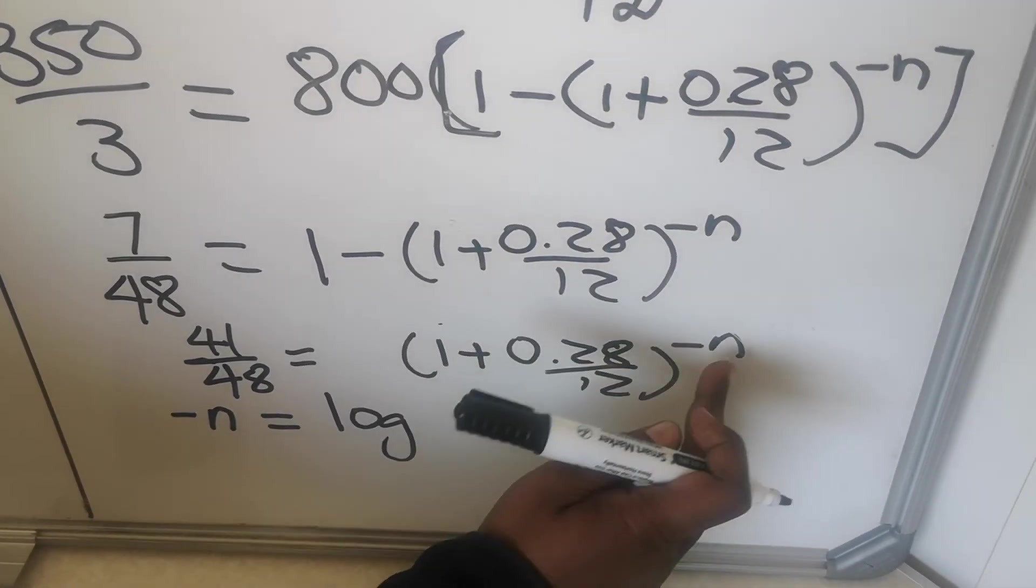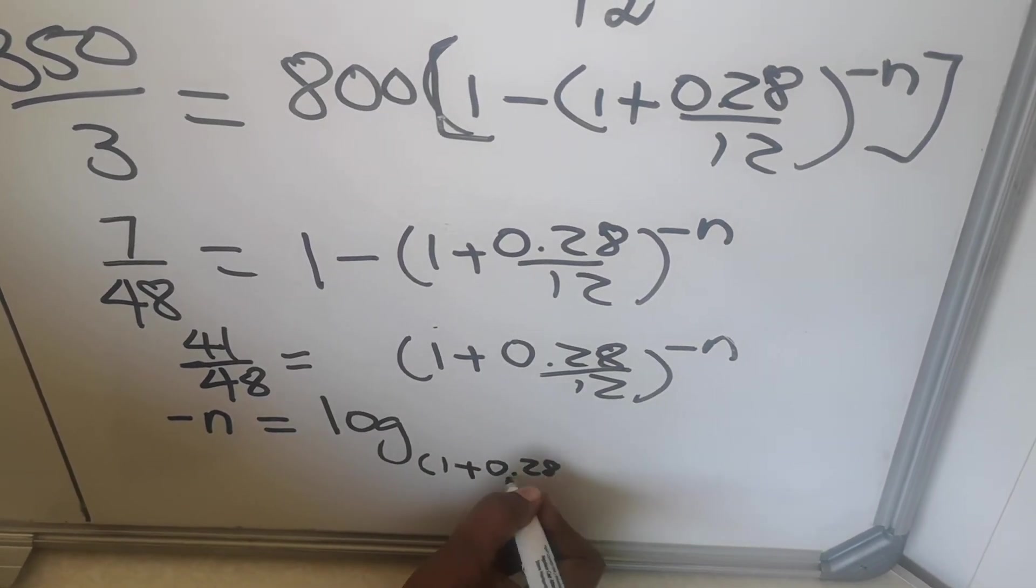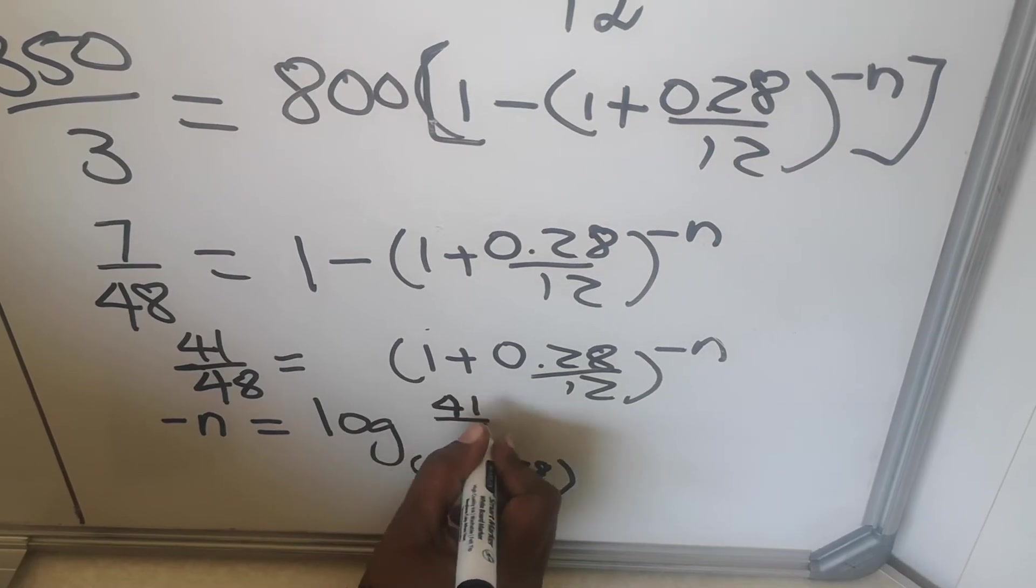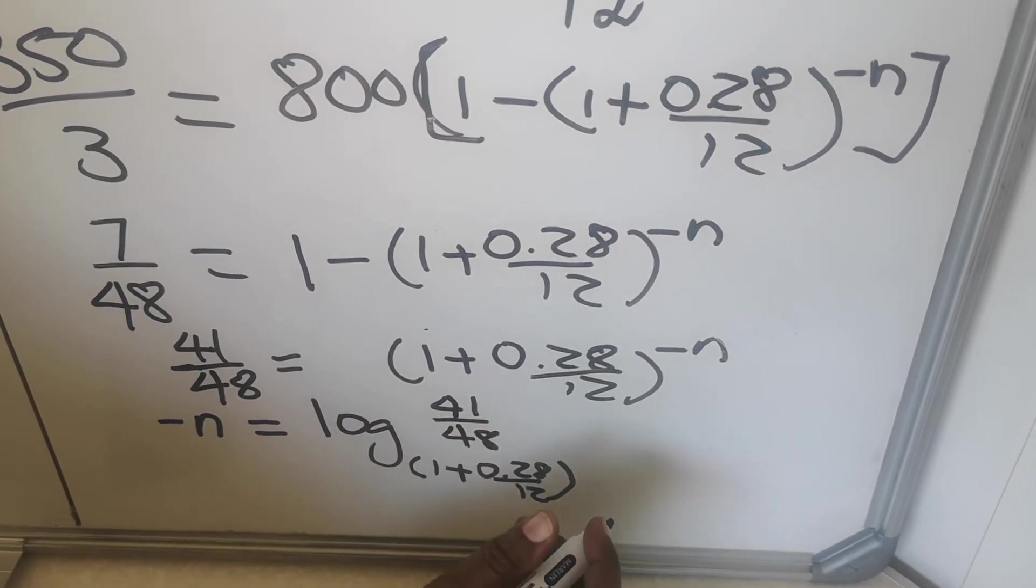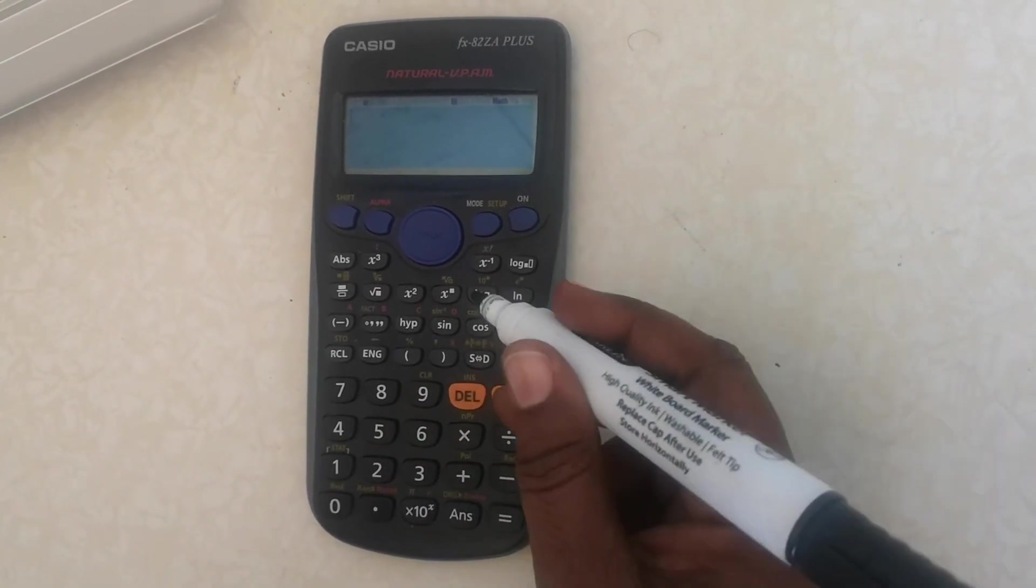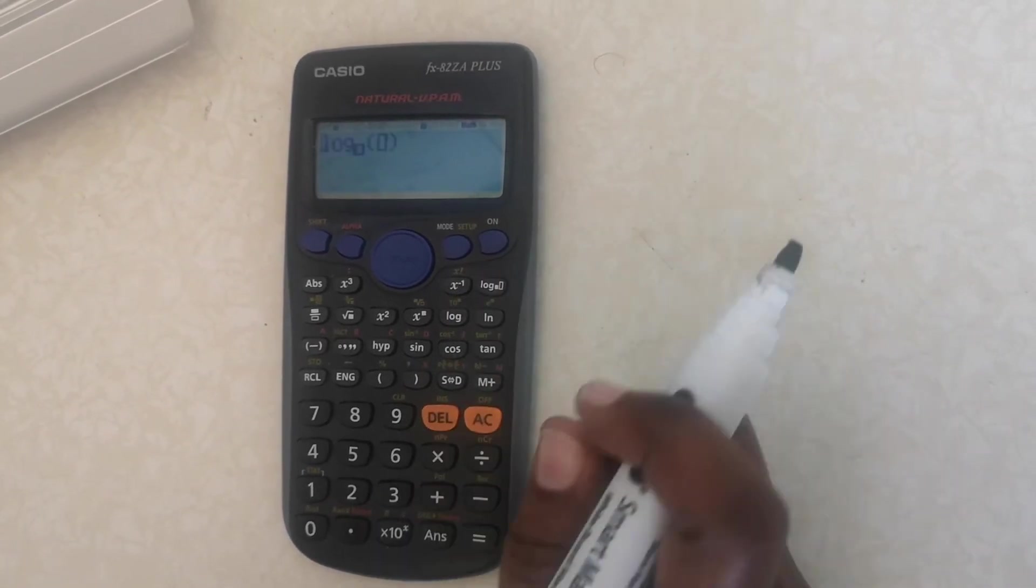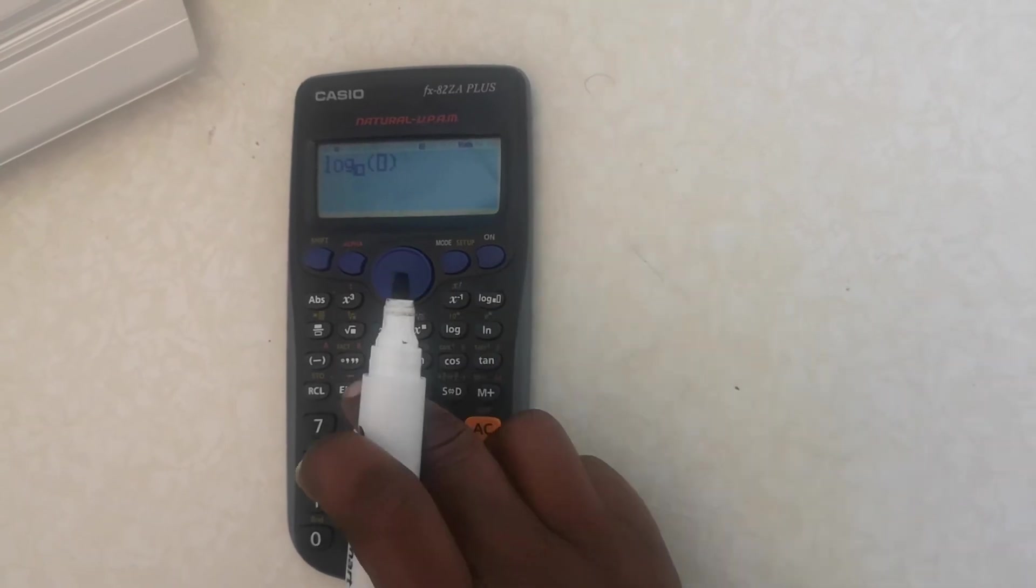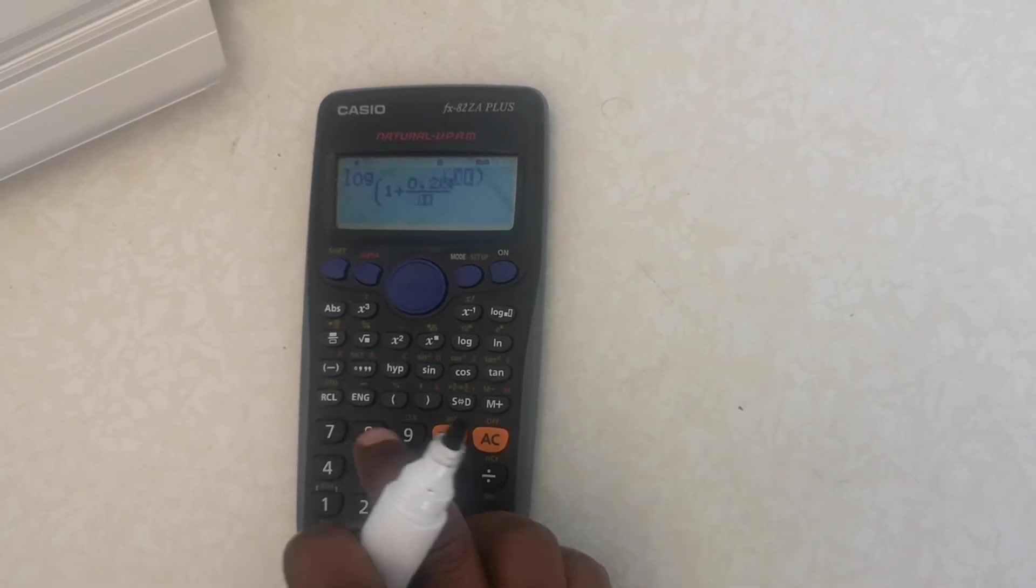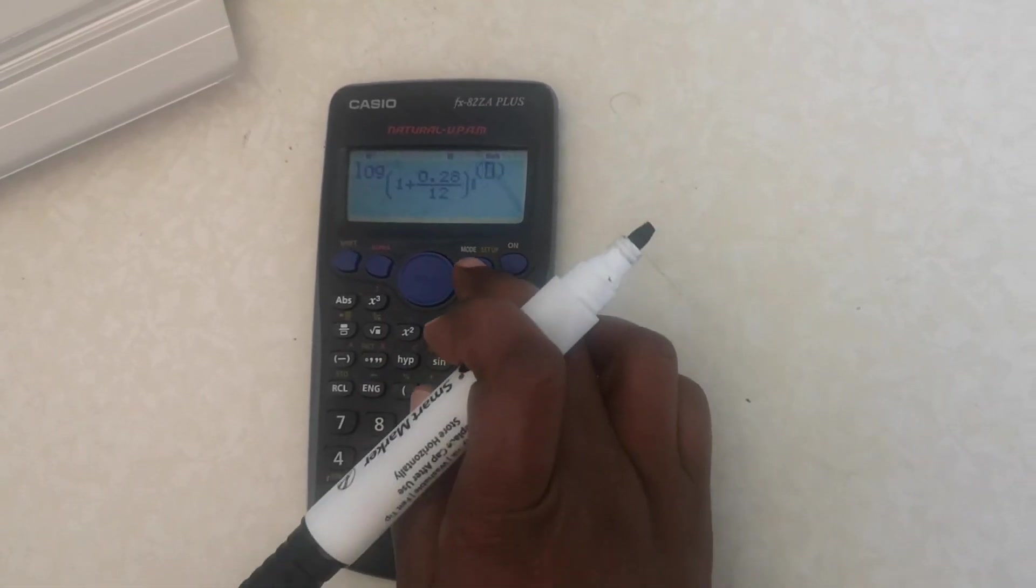So I have my minus n equals to log - this is the base, this is my power in my base - so it becomes a base here: 1 plus 0.28 over 12, and then that thing that was an answer becomes here, then you go 41 over 48. Then you take your calculator, you punch all of this and you calculate. You go for the log button. There are two logs. There's this log - this one is base 10, you don't use that one. You use the one that has a bracket thing so that you can put those values that are there. You go log, and then on the bottom there, open bracket 1 plus fraction 0.28, go down 12, and close bracket. Then I go to the other one.